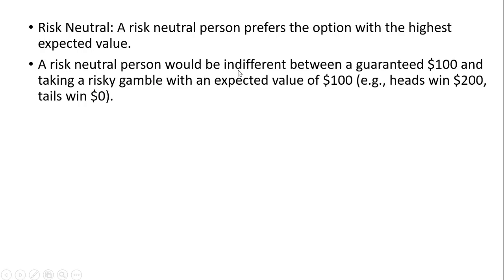A risk-neutral person would be indifferent between a guaranteed $100 and taking a risky gamble with an expected value of $100. For example, if heads shows you get $200, if tails shows you win nothing. The expected value of that gamble is $100, so a risk-neutral person would be indifferent between a guaranteed $100 and facing this gamble.